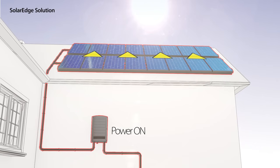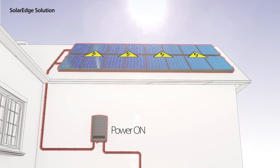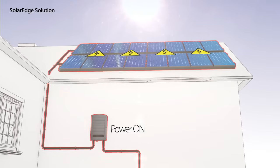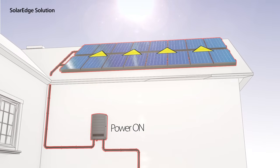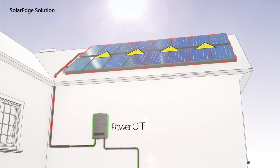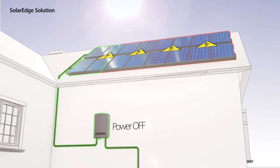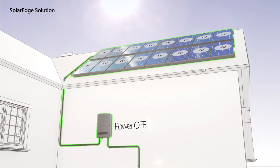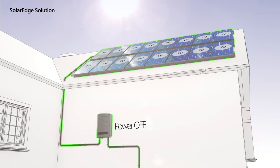In addition, we have incorporated panel-level safety mechanisms to protect installers, electricians, and firefighters. With the SolarEdge solution, whenever AC power is off, the string's DC high voltage is automatically reduced to a safe voltage. This solution meets new safety regulations in all significant PV markets around the world, as well as the 2014 National Electric Code in the U.S.